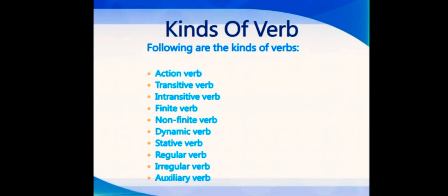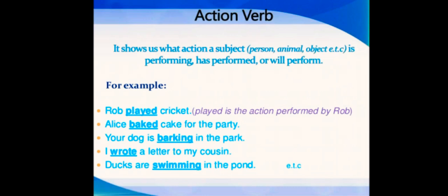First one is action verb. An action verb shows us what action a subject - person, animal, object, etc. - is performing, has performed, or will perform depending upon the time, depending upon the tense. The action verb basically shows us the time as well. Examples are: Rob played cricket, so Rob performed an action. Alice baked cake for the party, another action. Your dog is barking in the park - is is a helping verb, we will discuss it later, barking is the action. I wrote a letter to my cousin. Ducks are swimming in the pond, etc.